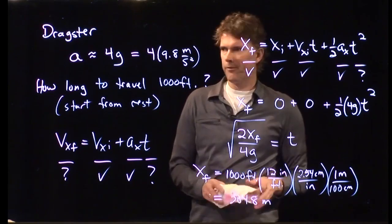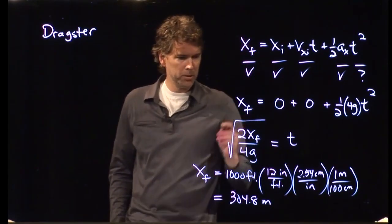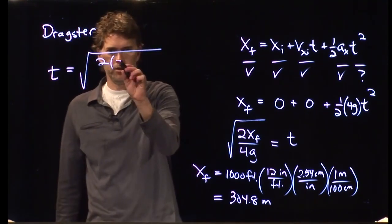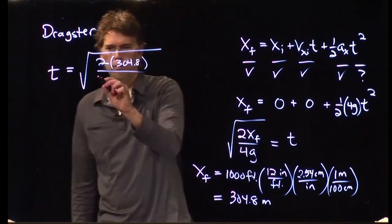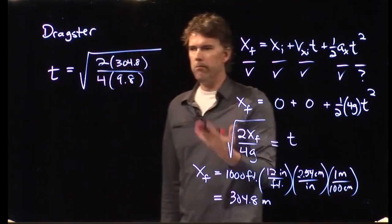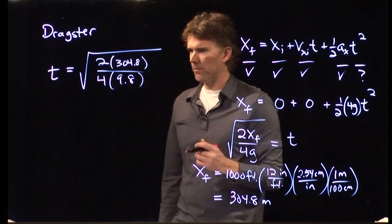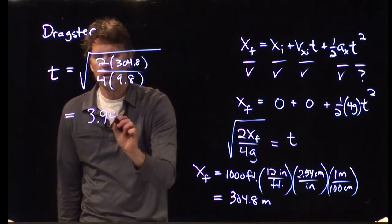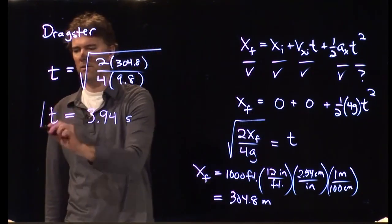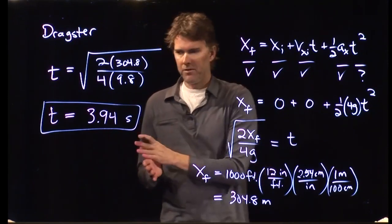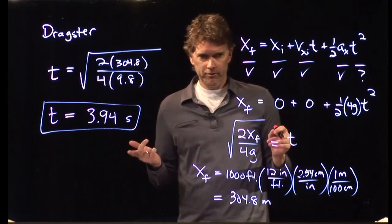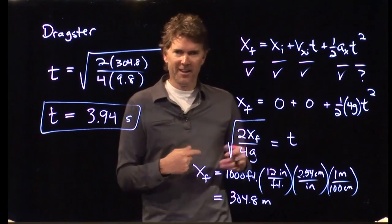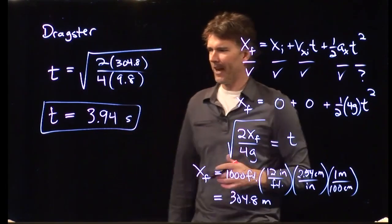So, let's plug in and calculate what we get for t. t equals the square root of 2 times xf, 304.8 meters, dividing by 4 times G, which is 9.8 meters per second squared. The meter is going to cancel out. Second squared ends up on top. Take the square root, you get seconds. And if you plug those into your calculator, you should get 3.9 seconds. And this is how long it takes a dragster to start from rest at 1,000 feet. And it turns out 1,000 feet is the real number they use at the drag strip. It used to be longer than that, a quarter mile. But the cars ended up going too fast and the tires were disintegrating. So, they shortened the track a little bit so the cars didn't end up going as fast.